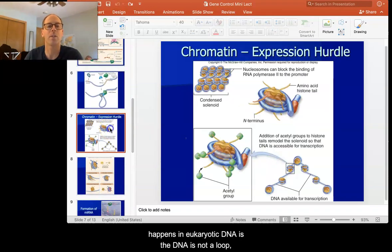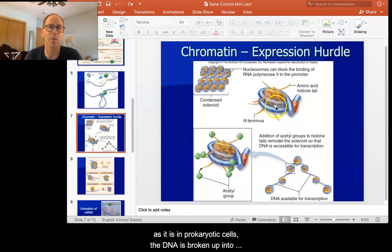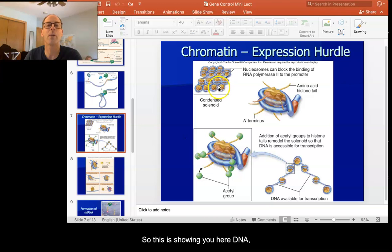Secondly, one of the things that happens in eukaryotic DNA is the DNA is not a loop as it is in prokaryotic cells. The DNA is broken up into strands, into fragments, and then these fragments are wrapped around a protein. So this is showing you here DNA, which is in blue, wrapped around this protein. Now this protein is called a histone.